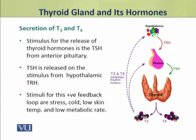The release of thyroid hormones is stimulated by thyroid stimulating hormone (TSH) from the anterior pituitary. This TSH is released on the stimulus of TRH from the hypothalamus. This is a positive feedback loop. The stimuli for this positive feedback are stress, cold and low skin temperature, and low metabolic rate. In these conditions, TRH from hypothalamus is secreted which stimulates TSH release, and TSH stimulates the release of thyroid hormones.